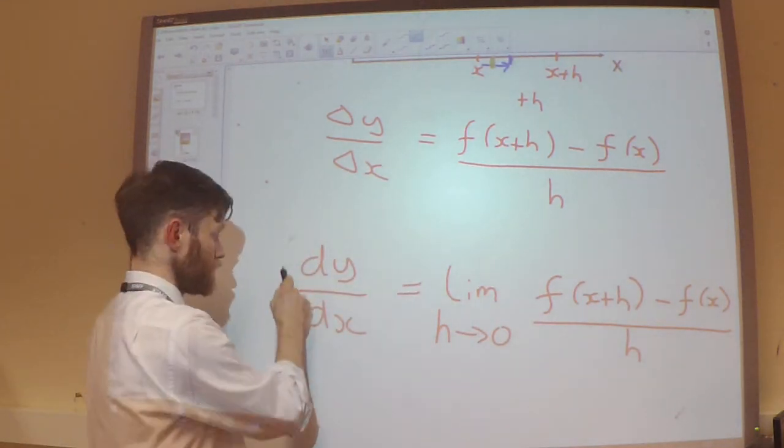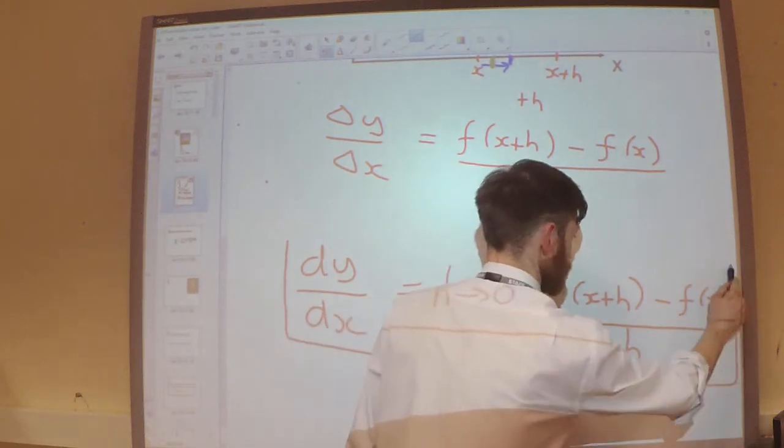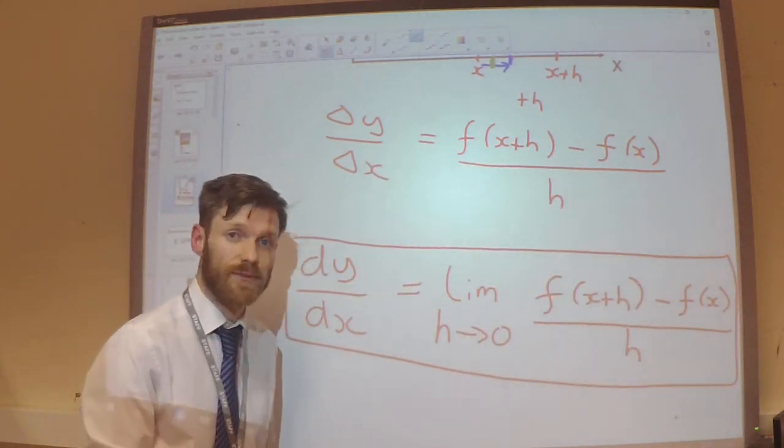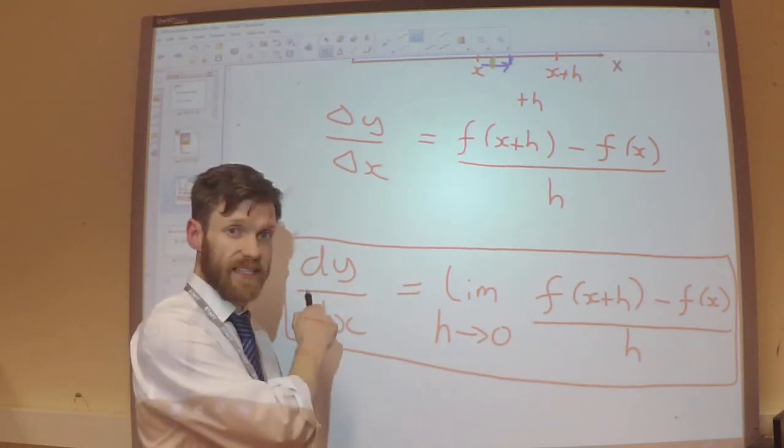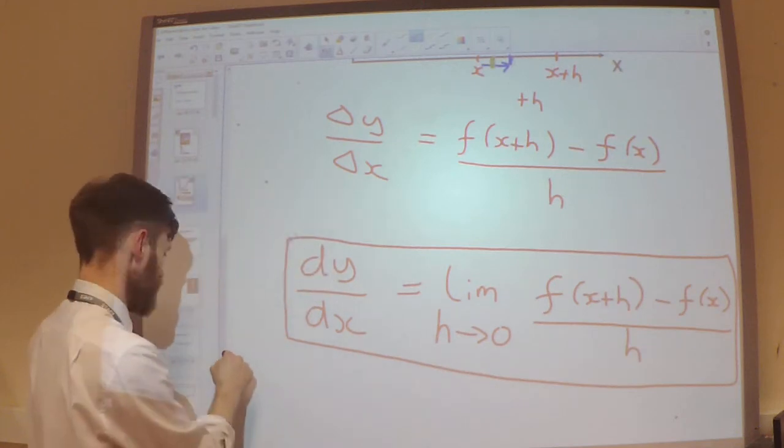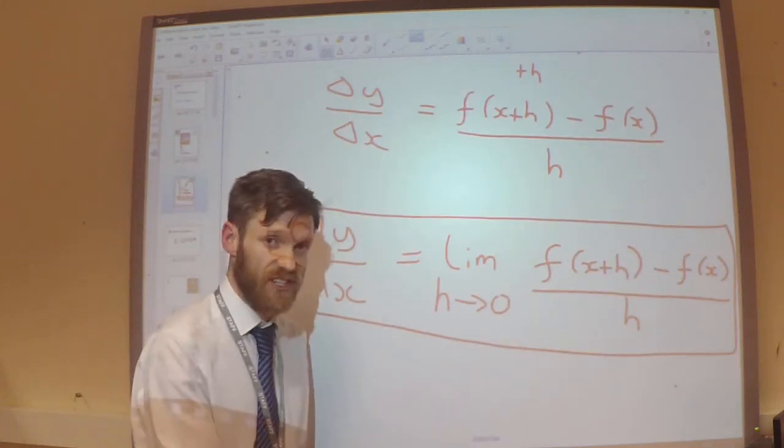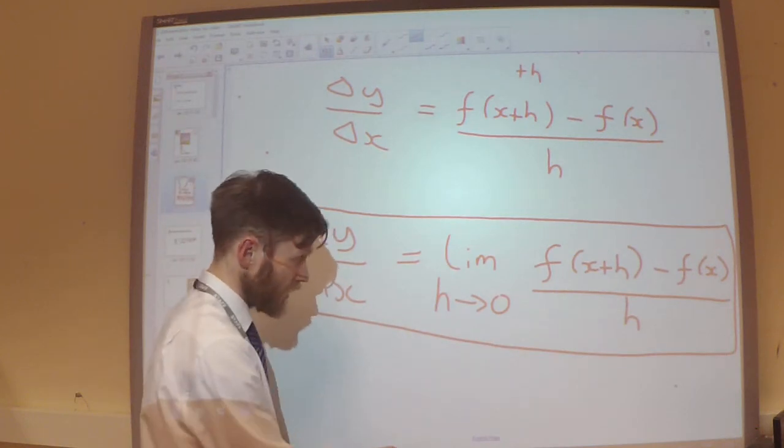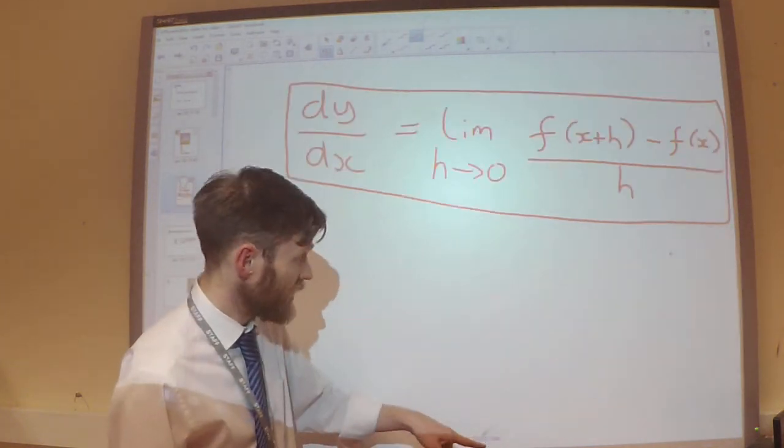So, this is what Isaac Newton ended up with. This is how he worked out the change in his function at a specific point. This is what's called differentiation from first principles. This is the formula. It's not the end of the story, however.